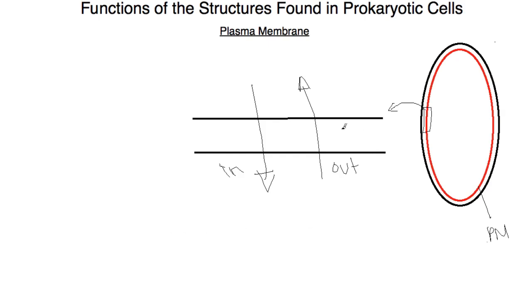Once again, it really just controls what comes in and what goes out of the cell, and it does so by either passive transport or active transport. Passive transport does not require energy, whereas active transport does. And so what you really need to remember is that the plasma membrane is semipermeable, which means that it can control what comes in and what goes out of the cell.